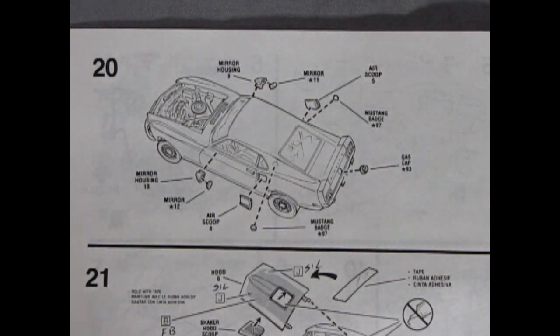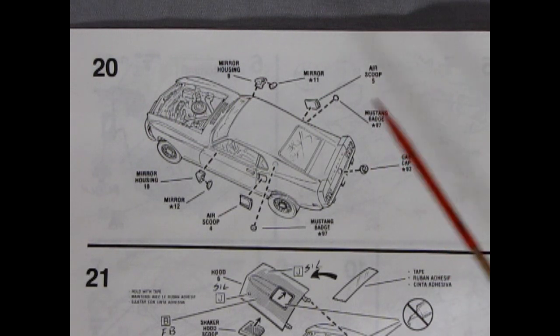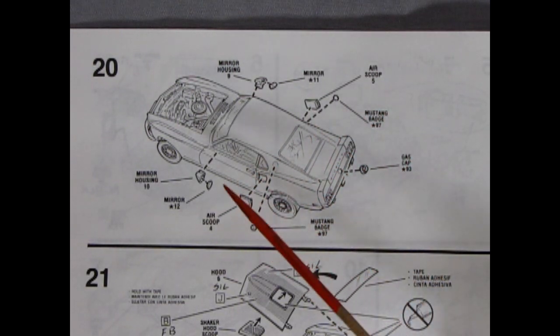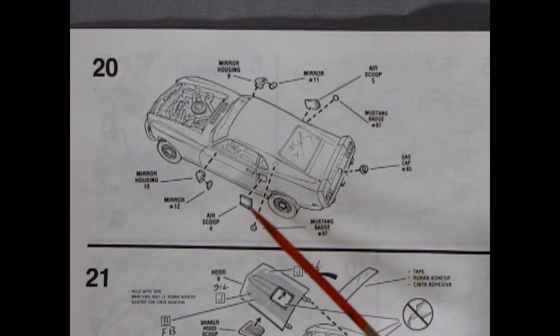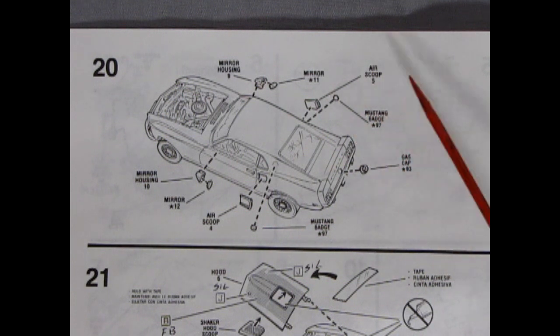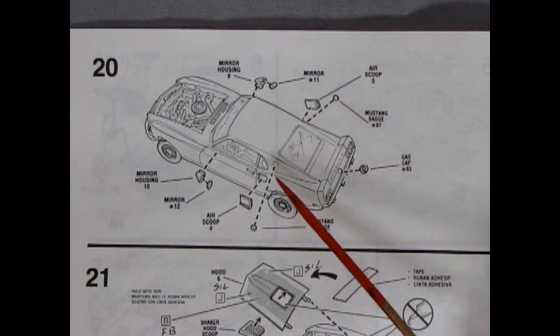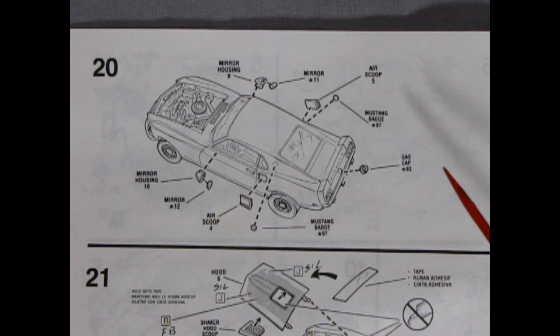Now we turn our instructions over to the back. And here is panel twenty. It says to glue on your mirrors with little chrome inserts into your mirrors there as well. There's a different style of scoop from the Shelby that glues on there, factory style. And then we get our little Mustang badges gluing up into our sail panels and a gas cap going into the back.